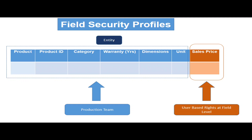For example, I have a product entity in which a product is defined by a production team. Whenever a product is produced, the team defines all attributes of the product within the entity. After that, a user from the finance team defines the sale price. I want the production team to only update the fields shown in blue, while only one finance user can update the sale price field.